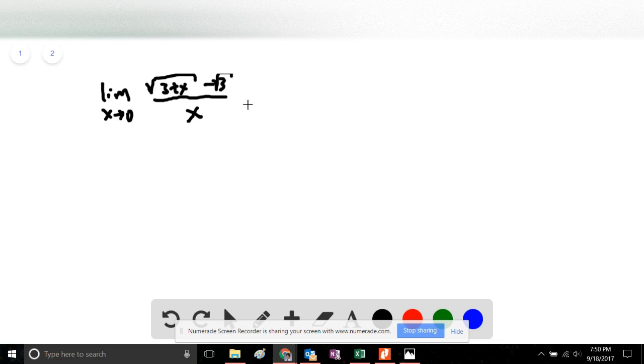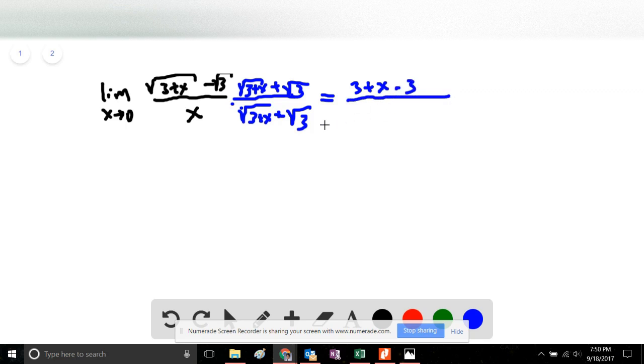We will take the next step of rationalizing the numerator by multiplying by the square root of 3 plus x plus the square root of 3 to the top and the bottom, which gets us 3 plus x minus 3 in the numerator divided by x times the quantity square root of 3 plus x plus the square root of 3.